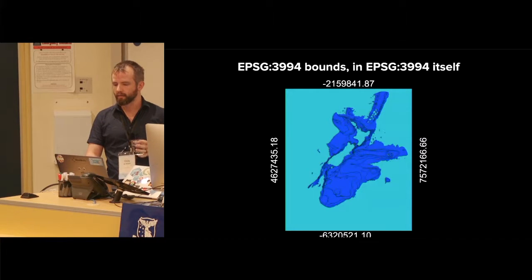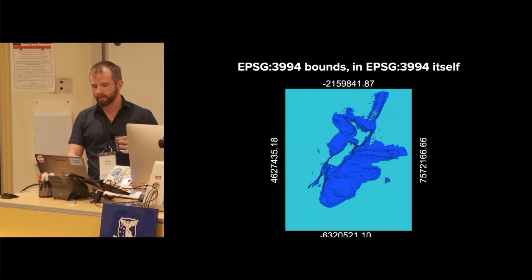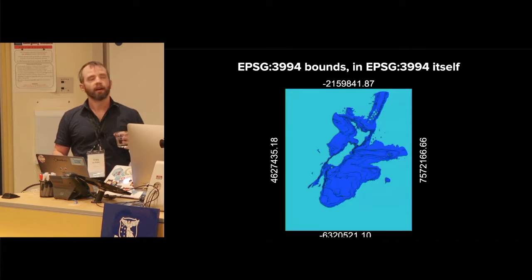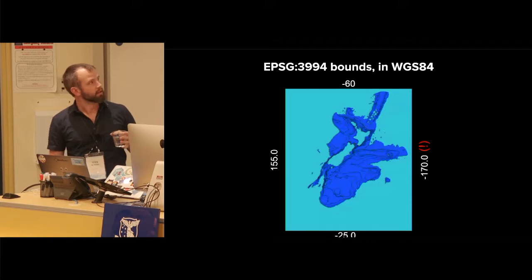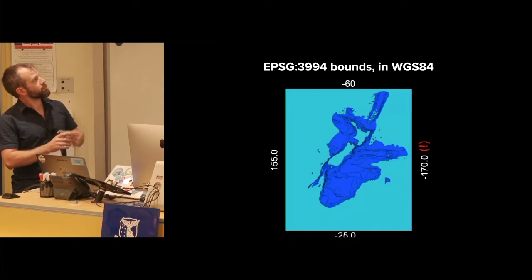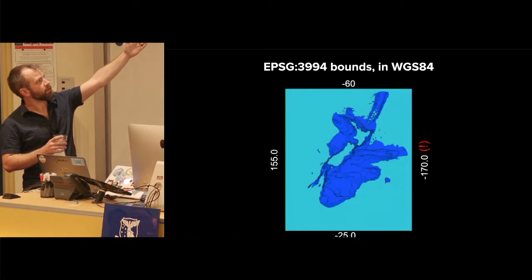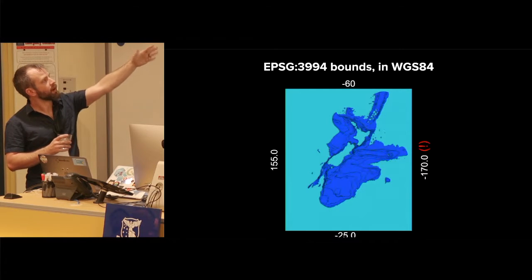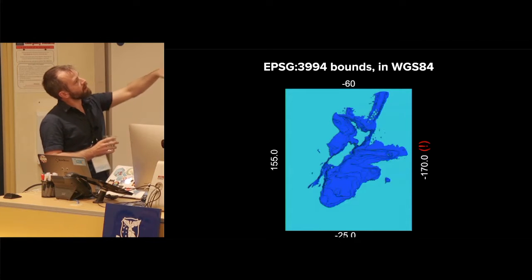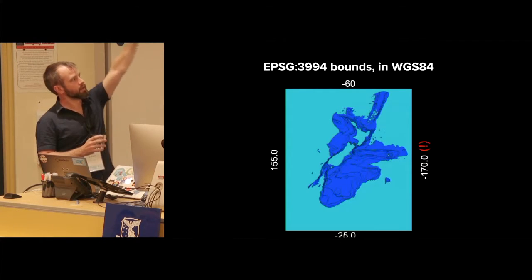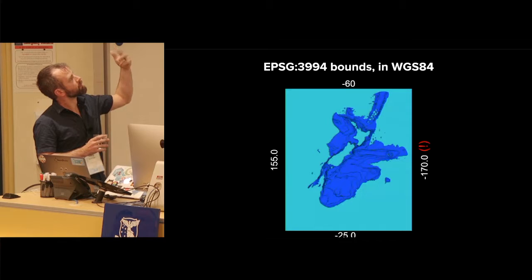Now I'm going to reproject this data. Or actually, I'm just going to change the numbers into WGS84, which is a global projection. It's not really a projection, but it's what you might be familiar with when you talk about where things are on the earth. There's degrees. Those numbers translate into these numbers when you're talking about degrees. On the left, you have 155 degrees east. On the right, you have minus 170 east, which is to say 170 west.